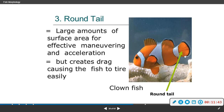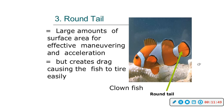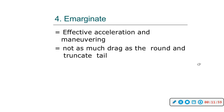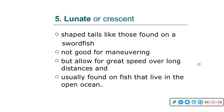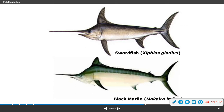A rounded tail has a large surface area for effective movement and acceleration but creates drag, causing the fish to tire easily — this is why you see short bursts of high speed. The emarginate tail has effective acceleration and maneuvering with less drag than the round or truncate tail. The lunate or crescent-shaped tail, like that of a swordfish or tuna, is not good for maneuvering but allows for great speed over long distances and is usually found on fish living in the open ocean.